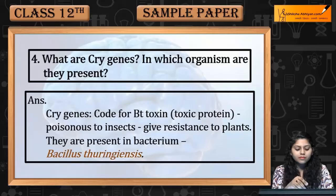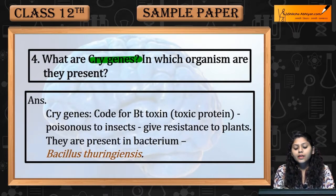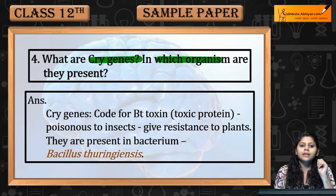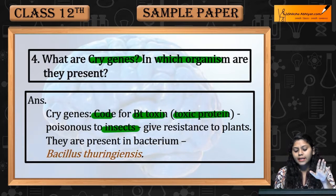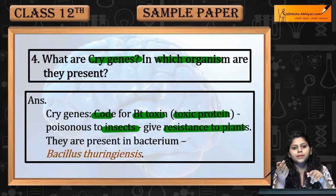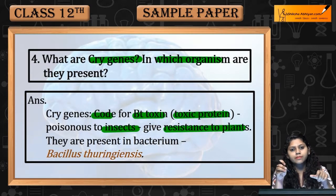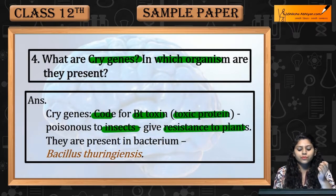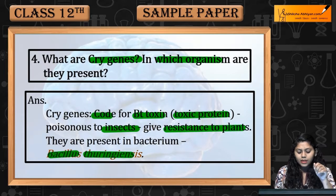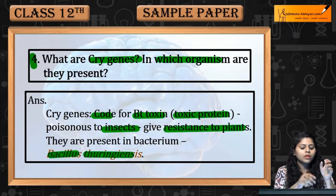Question number four: What are cry genes? In which organisms are they present? Cry genes code for Bt toxin, which is a toxic protein — poisonous for insects — and provides resistance in plants. These genes are poisonous for insects and provide resistance to plants. They are present in the organism Bacillus thuringiensis. This was question number four.